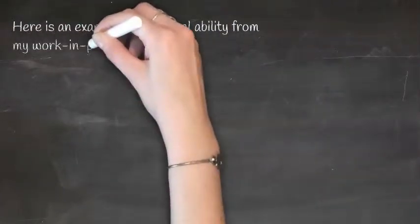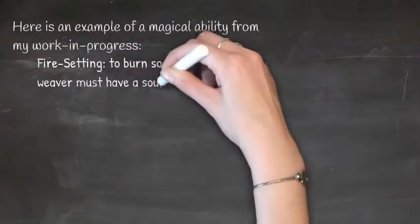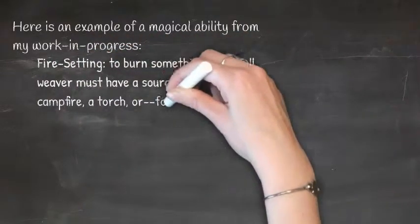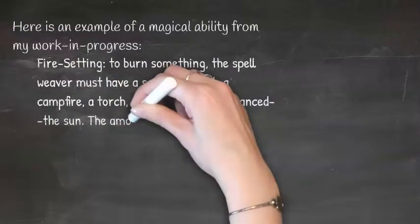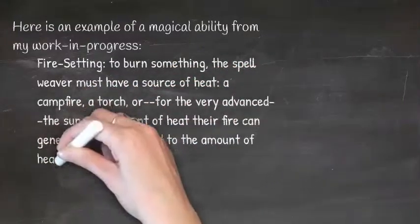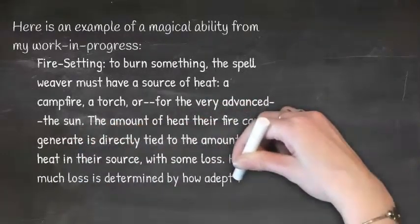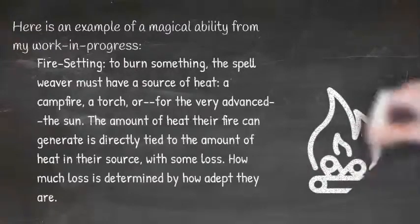Here is an example of a magical ability from my work-in-progress. Fire-setting: to burn something, the spell weaver must have a source of heat—a candle, a torch, or for the very advanced, the sun. The amount of heat their fire can generate is directly tied to the amount of heat in their source with some loss. How much loss is determined by how adept they are.